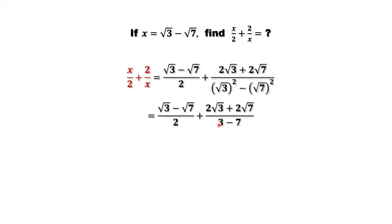Now 3 minus 7 is negative 4, and negative 4 is negative 2 times 2. In the numerator we have a factor of 2, and we can cancel one factor of 2 from both numerator and denominator. So the denominator becomes negative 2, and the numerator is square root of 3 plus square root of 7.